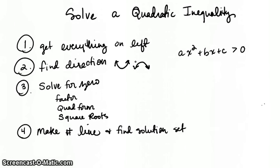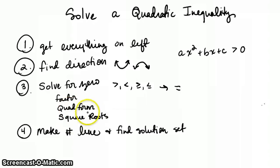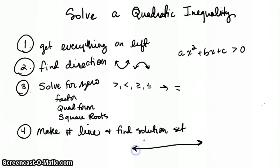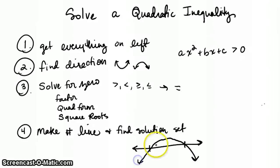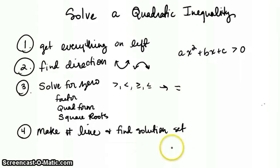Then we want to solve for zero. Basically, you want to change the inequality sign — whether it's greater than, less than, greater than or equal to, or less than or equal to — you want to change that to an equal sign just for the sake of solving this problem. Then find the zeros of the function. You can do that by factoring, using the quadratic formula, or taking the square roots. Once you've found the zeros, we're going to make a number line, plot your zeros on it, and graph your parabola shape — either up like a cup or down like a frown — right through those zeros. That will help us find our solutions, which will have inequality signs.